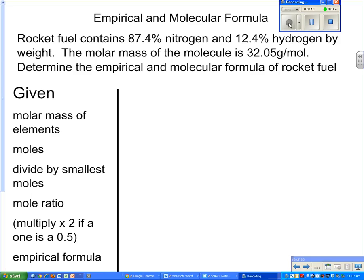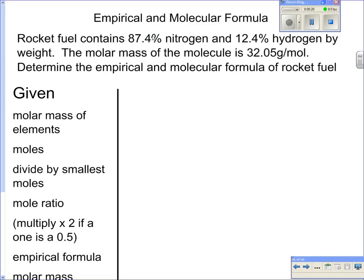The rocket fuel contains 87.4% nitrogen and 12.4% hydrogen. We actually assume that we have 100 grams so that we can make the 87.4 actual grams. So we're just going to change the percent sign and put a G. No calculations or anything, just percent becomes a gram.